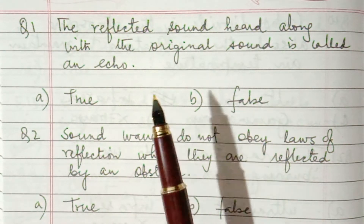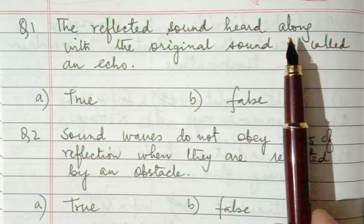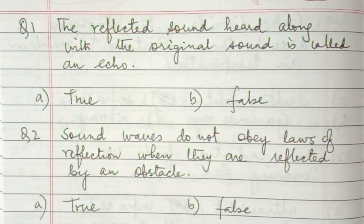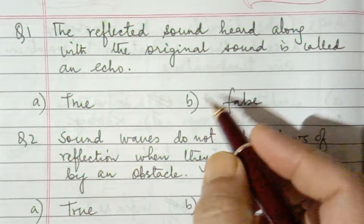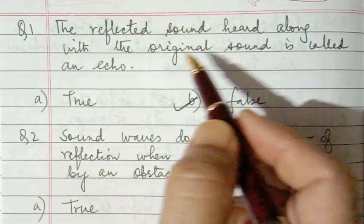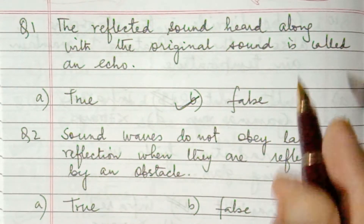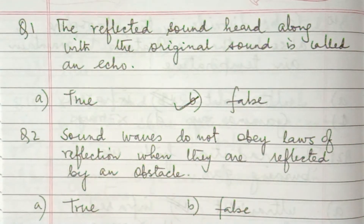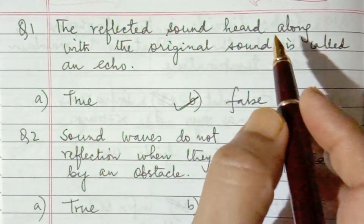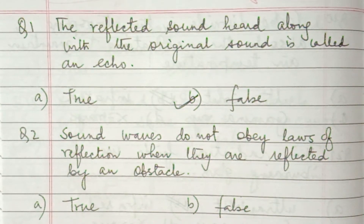Question number 1: the reflected sound heard along with the original sound is called an echo — true or false. This is a false statement because echo is the reflected sound heard after the original sound has ceased. When the reflected sound is heard separately from the obstacle, that is called echo. So when it is heard along with the original sound, that will not be the echo. So this is false.